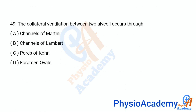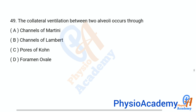Question number 49: Collateral ventilation between two alveoli occurs through — option A: channel of Martini, option B: channel of Lambert, option C: pores of Kohn, option D: foramen ovale. The correct answer is option C: pores of Kohn.